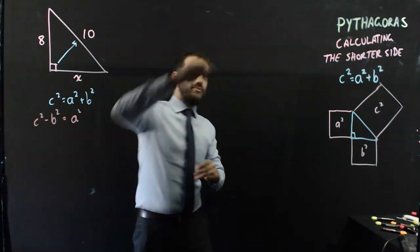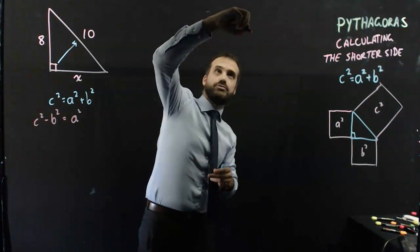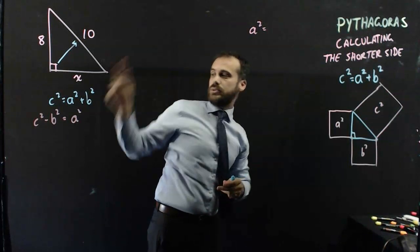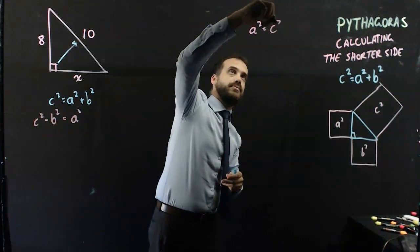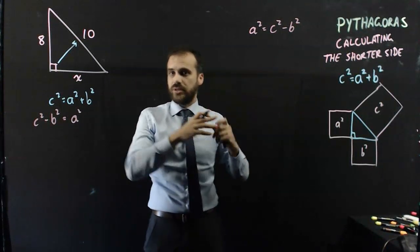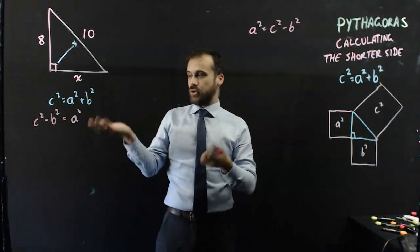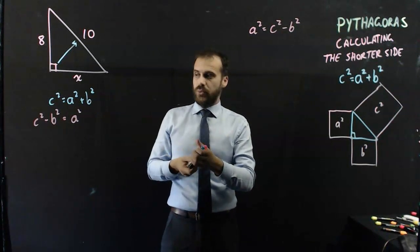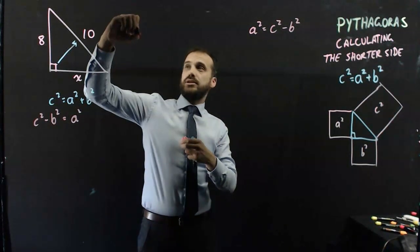And we can just write that formula up here. I'll just write it as a squared equals c squared minus b squared. And you can hold on to that. That's a great formula for finding a shorter side. Now that we've got a formula like that, we can just find the shorter side.